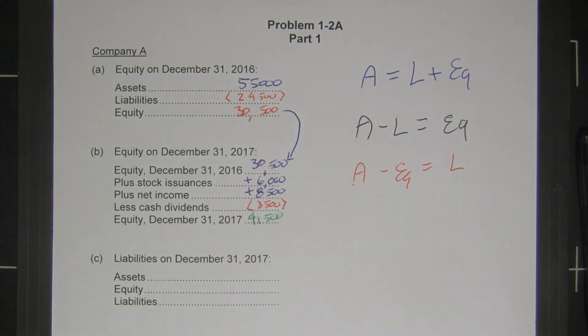Then they tell us on December 31st, if our assets were $58,000, what were our liabilities?